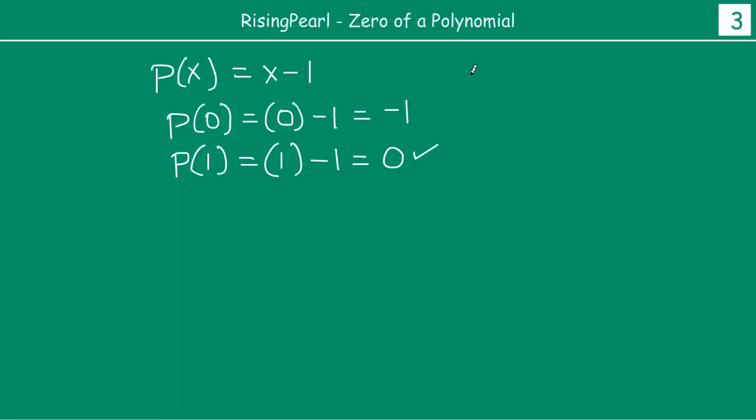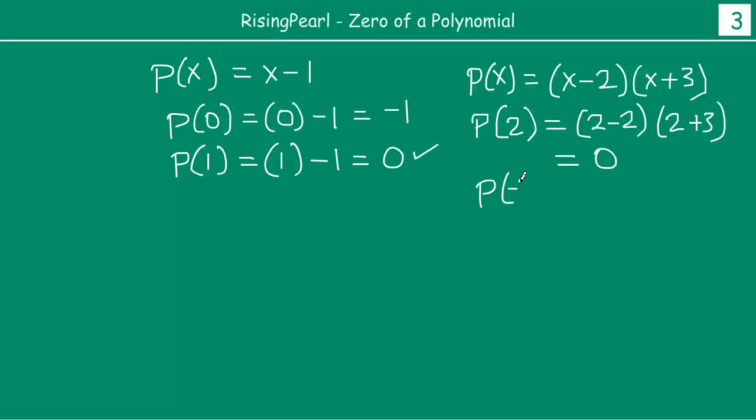Now chaliye ek aur example lete hain. Let us write something like, maan lijiye P(x) is given by something like x minus 2 multiply by x plus 3. Agar P(x) is given like this, Dostor, then at x equal to 2 iski value kitni hogi? At x equal to 2, aap x ke jagah aap 2 bithe hogi, then you will notice ki ye jo pehli term hai this will become 2 minus 2 and then this will become 2 plus 3. So you will notice 2 minus 2 is 0 and 0 multiplied by something is 0. Similarly aap notice kijiye yaap at x equal to minus 3, what will be the value? At x equal to minus 3, aap yaap jab bithe hogi. So what you will get is you will get minus 3 minus 2 times x will be minus 3 plus 3. So again this is basically 0. So this value will be 0.